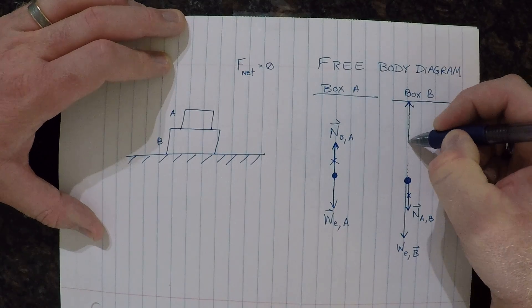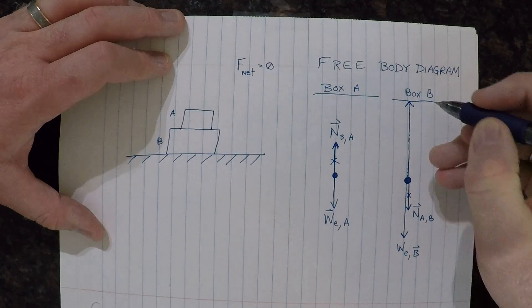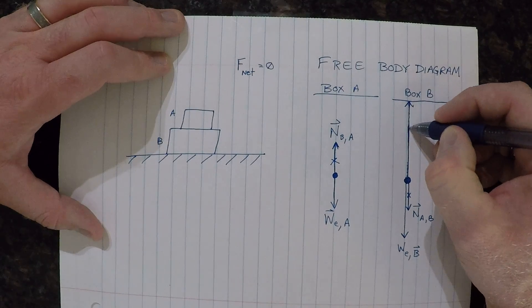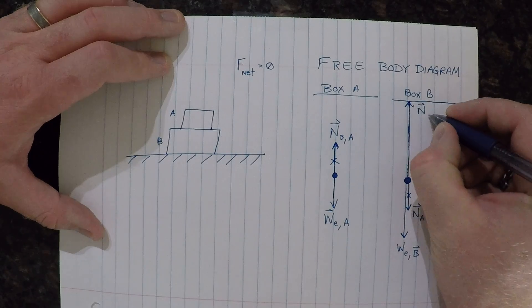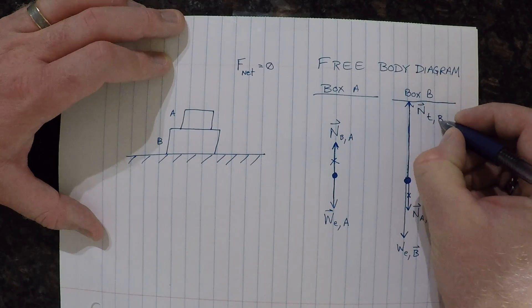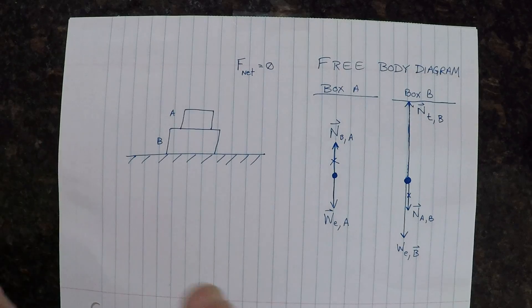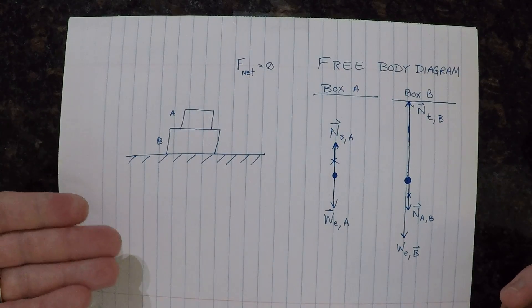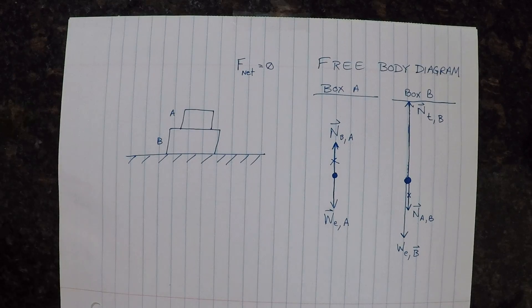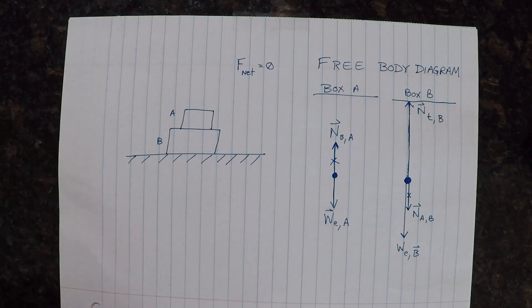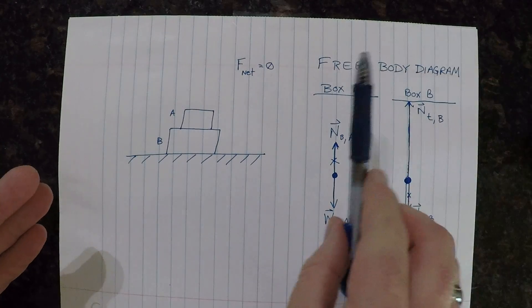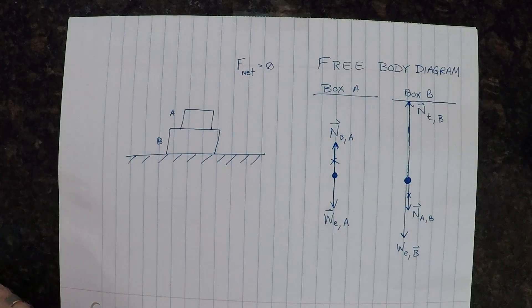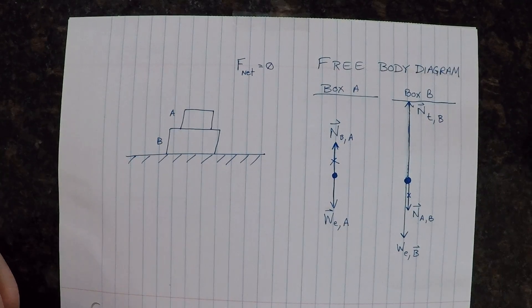So that's going to be this arrow. It'll be a larger normal force than what box A was experiencing. So this is the normal force of, we'll call it the table on B. So this is how we draw a free body diagram for a static equilibrium situation with more than one object. If we wanted to add objects to this, we would just have to increase the number of diagrams that we're drawing.